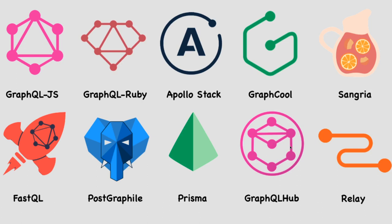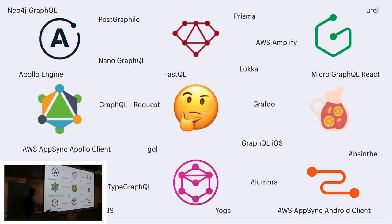This playlist is going to cover all these different libraries: we have GQL, TypeGraphQL, GraphQL iOS, FastQL, Nano GraphQL, and Prisma — which is the latest technology known as a lightweight ORM for Node.js, connecting to all different databases. There is also Yoga, which is a library helping us to create a GraphQL server.